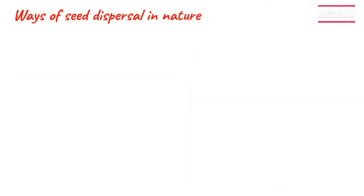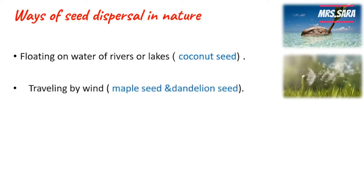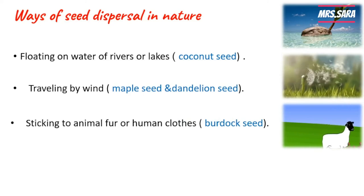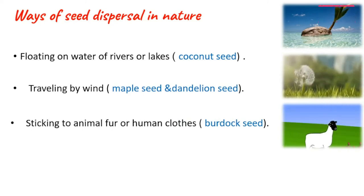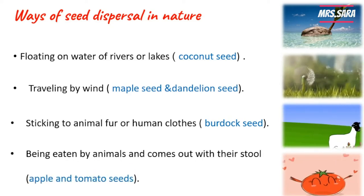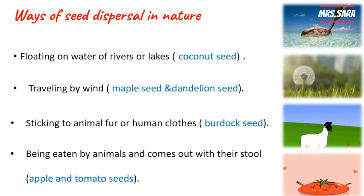So the ways of seed dispersal in nature are: number one, floating on water of rivers and lakes like the coconut seed; number two, traveling by wind like the maple seed and the dandelion seed; number three, sticking to the animal's fur or human clothes, and our example is the burdock seed; number four, by being eaten by animals and coming out with their stool, and our examples are the apple and tomato seeds.